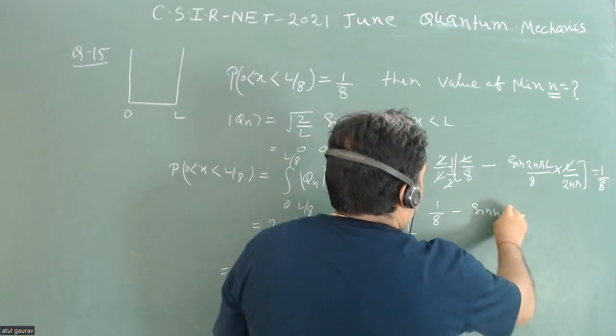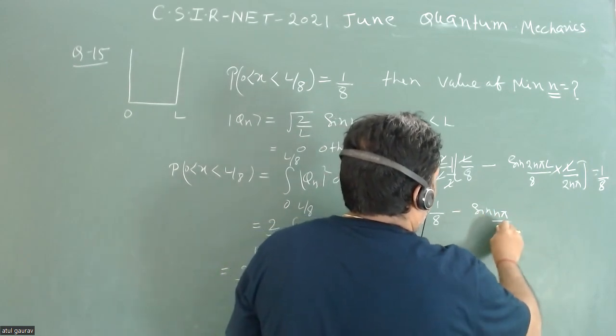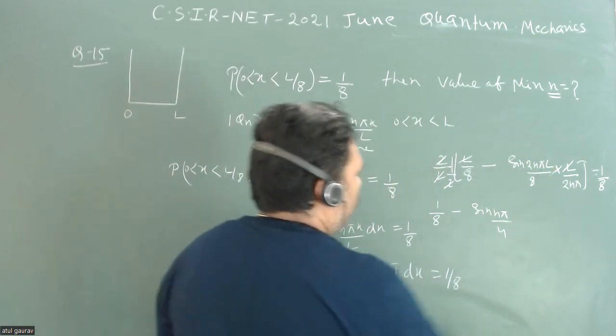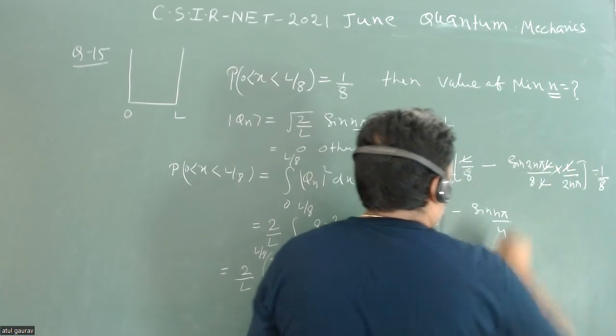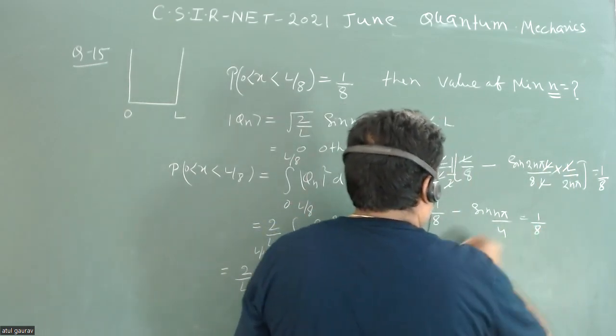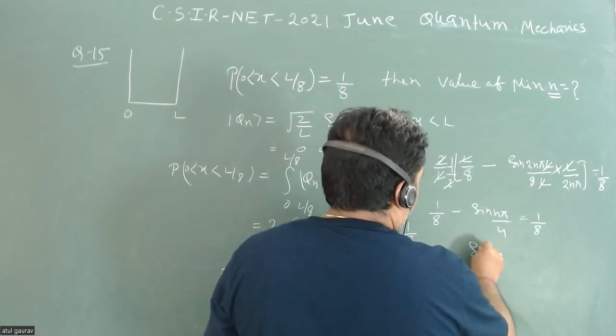sine n*pi/4 - the 2 and 2 cancel out, and L is also there so this will cancel out - equals 1/8. From here we have sin(n*pi/4) equals 0.